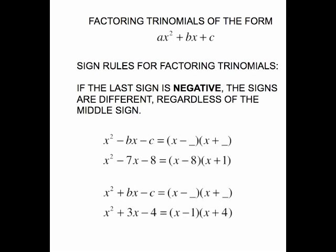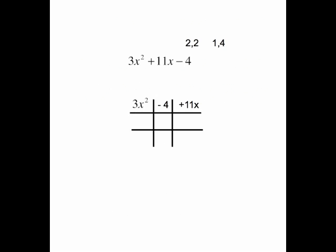This is the third part of the videos on using the tic-tac-toe method of factoring trinomials. This video will deal with the last term being negative. The sign rule says if the last sign is negative, the signs are different regardless of the middle sign. Whether it says x² - bx - c or x² + bx - c, the important thing is the minus c tells me the signs in the parentheses will be different, and we will use that rule on all of the rest of these today.